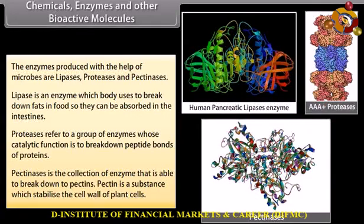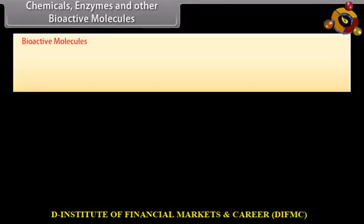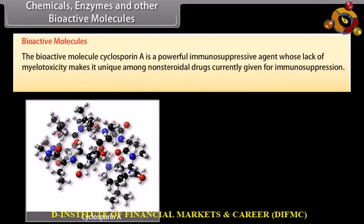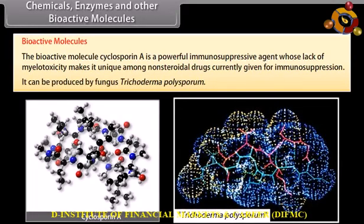Pectinases is the collection of enzymes able to break down pectins. Pectin is the substance which stabilizes the cell wall of plant cells. The bioactive molecule cyclosporine A is a powerful immunosuppressive agent whose lack of myelotoxicity makes it unique among non-steroidal drugs currently given for immunosuppression. It can be produced by the fungus Trichoderma polysporum.